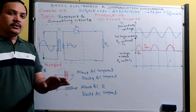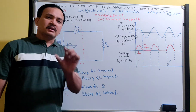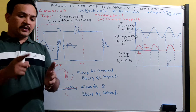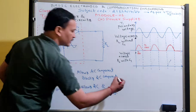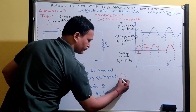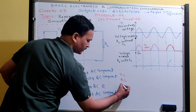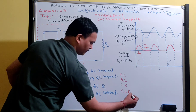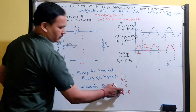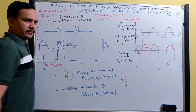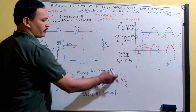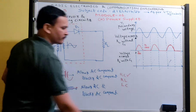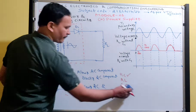Along with inductors and capacitors, we can also use a resistor, but the resistor does not do filtering. During discharge conditions, the resistor provides a path for the charged element. Based on these components, we can have the following smoothing circuits: RC smoothing circuit, RL smoothing circuit, LC smoothing circuit, and combinations such as CLC — two capacitors with one inductor. The most commonly used smoothing circuit is the RC circuit.